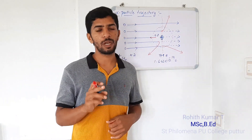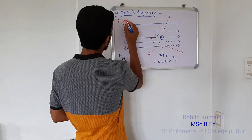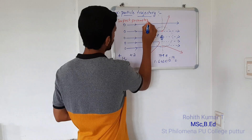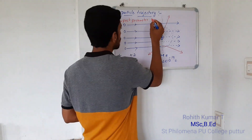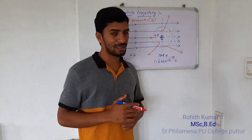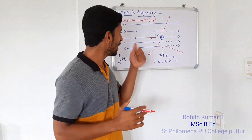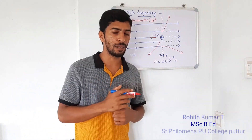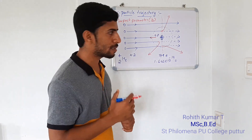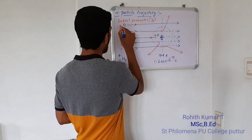Now I will explain the first term: impact parameter, represented by the letter B. The definition is: the perpendicular distance between the initial velocity vector of the alpha particle and the center of the target nucleus. To explain this, I will name the alpha particles 1, 2, 3, 4, and 5.